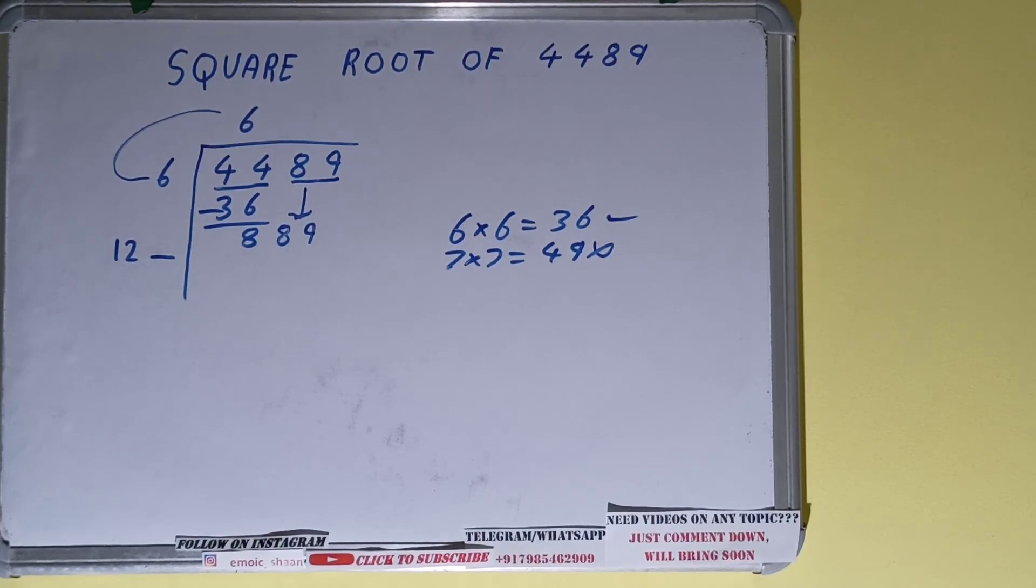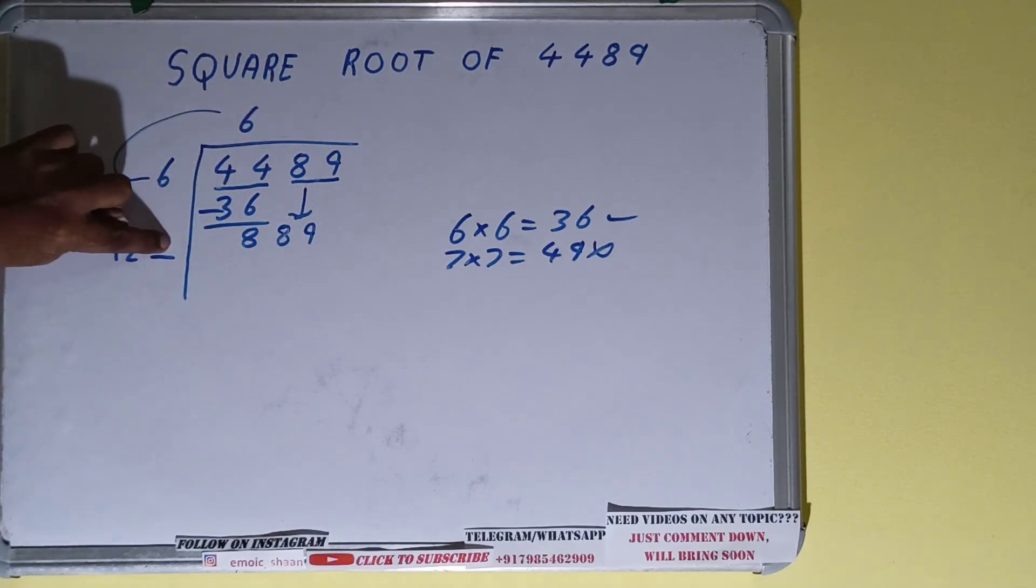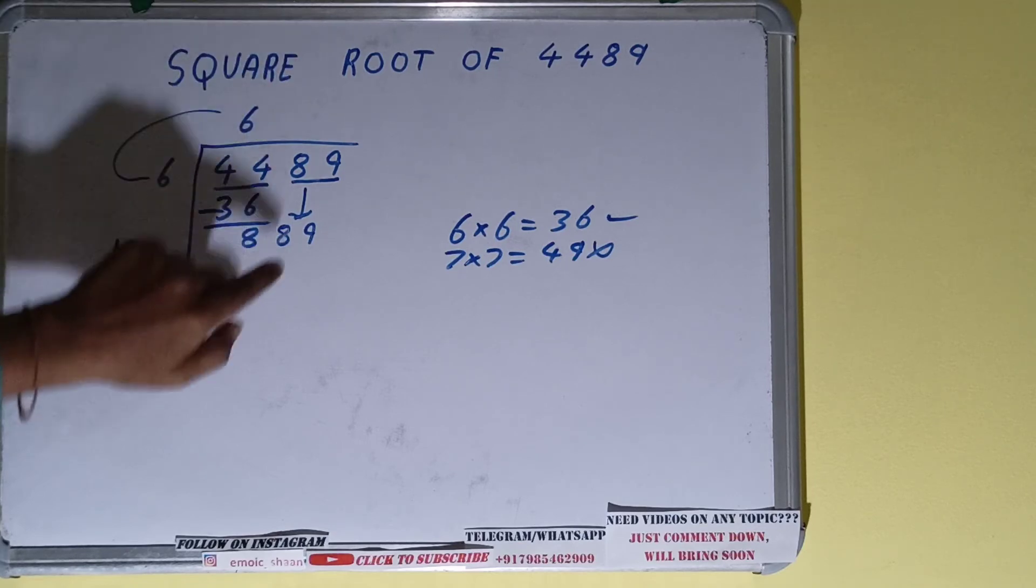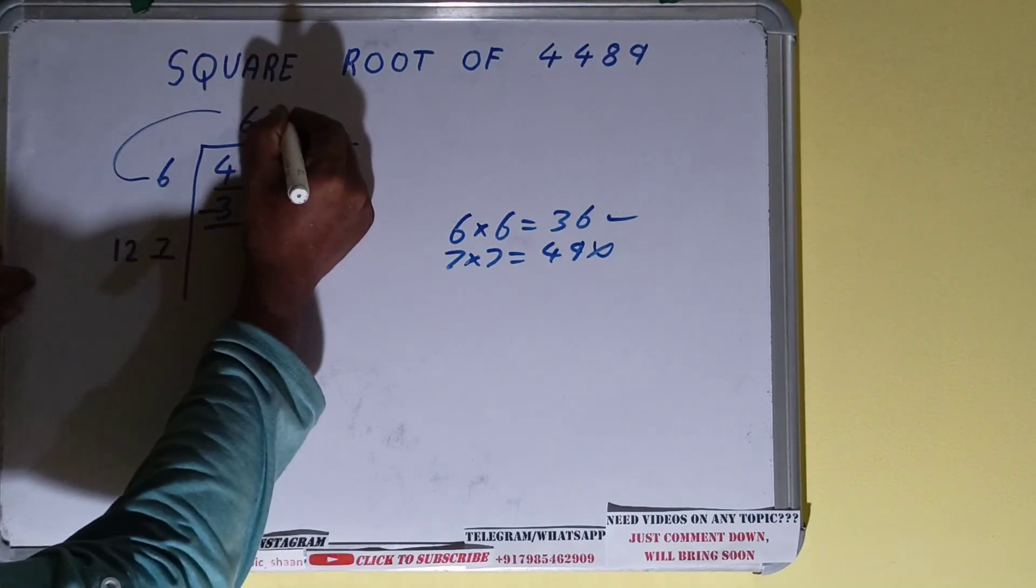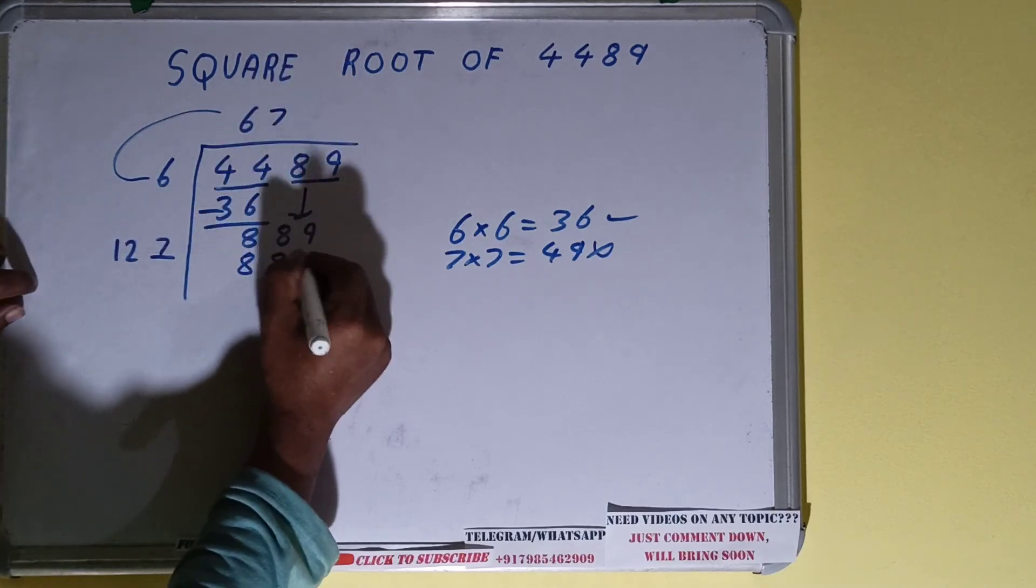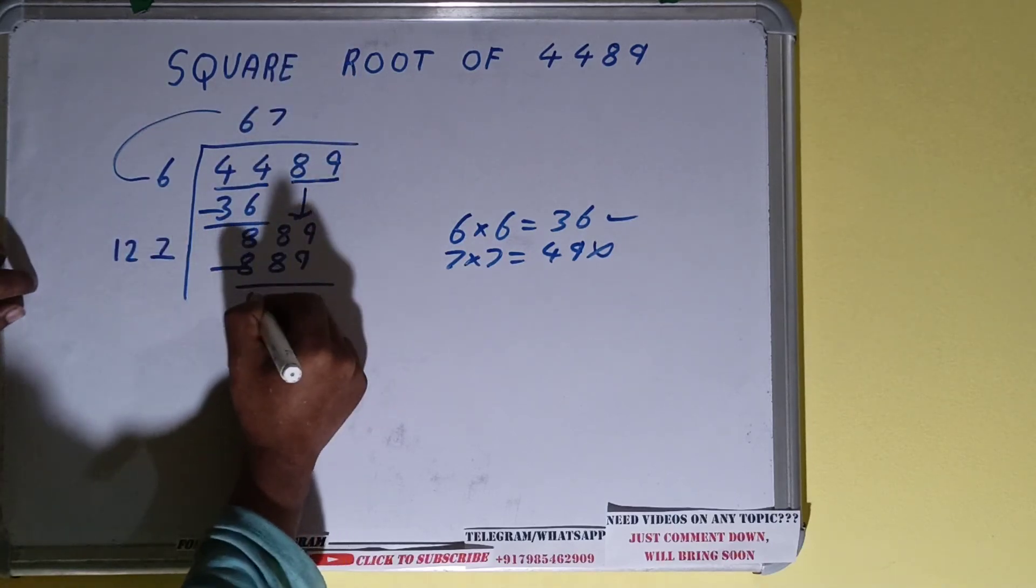According to the rule, whatever number we place here, we have to place here as well. So if we take 127 times, so 127 times 7 is 889, so we can use that. And it will be 889. Subtract it, you'll get remainder as zero.